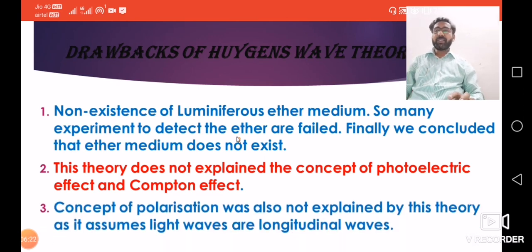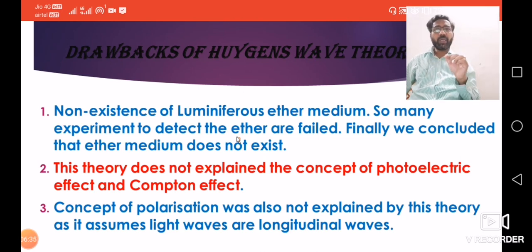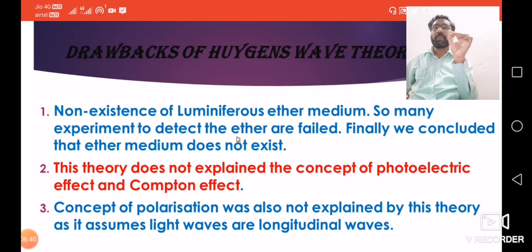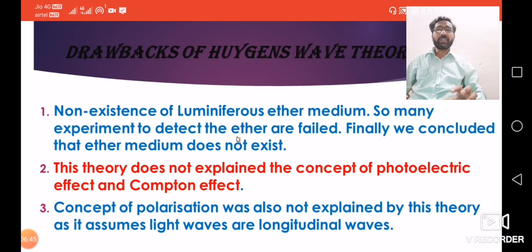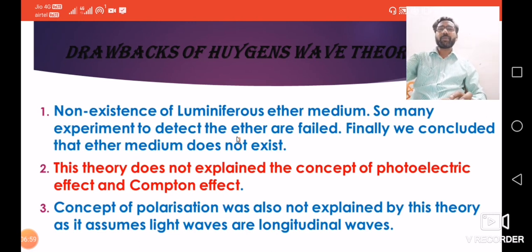Another drawback is polarization. As mentioned in Newton's theory drawbacks, there is the concept of polarization. The concept of polarization was also not explained by Huygens' theory, because polarization is shown only by transverse waves, and Huygens assumed that light waves are longitudinal waves. So polarization was not explained, and the luminiferous ether medium also became a main drawback.